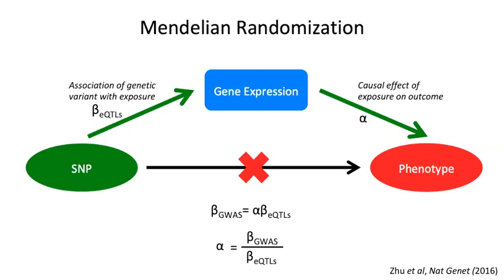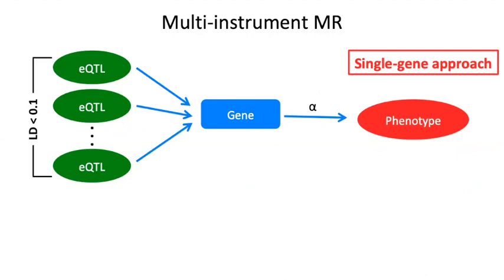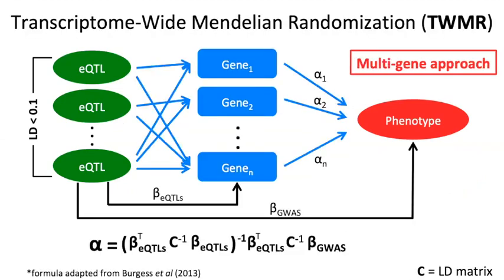I just presented the easy example where we have only one SNP. But a gene can have multiple independent eQTLs, so we have to include these SNPs in our Mendelian randomization model — this is the single-gene approach. We also know that a SNP can be an eQTL for multiple genes at the same time. For these reasons, we proposed a transcriptome-wide Mendelian randomization approach, TWMR, which uses multiple SNPs and multiple genes simultaneously. The formula now includes C, the LD matrix containing the linkage disequilibrium between all SNPs in the model.